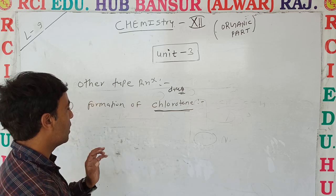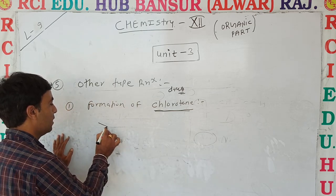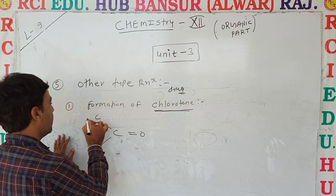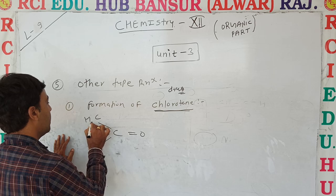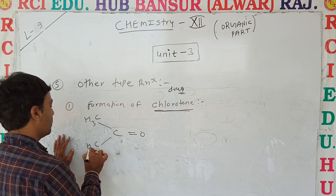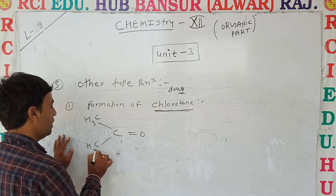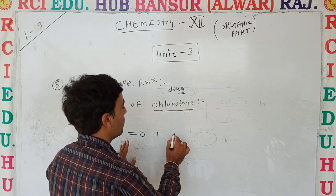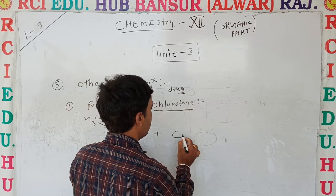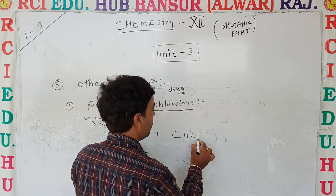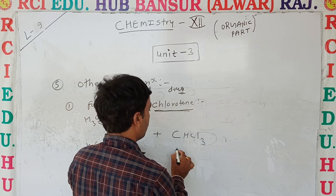If we look at the ketone reaction, mostly acetone we can use. In the acetone reaction, students, the product is chloroform — that is chloroform.